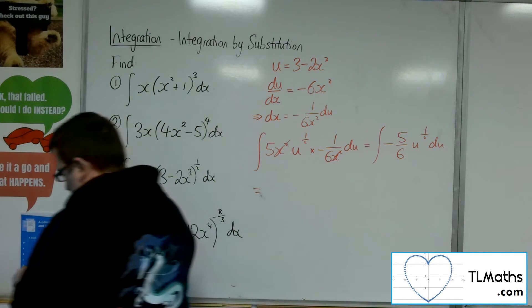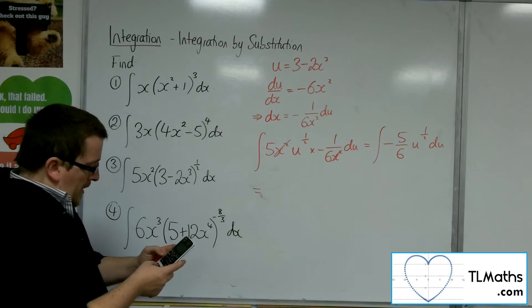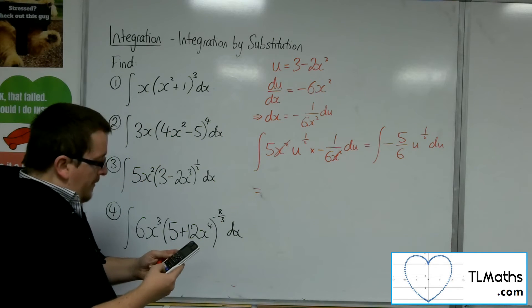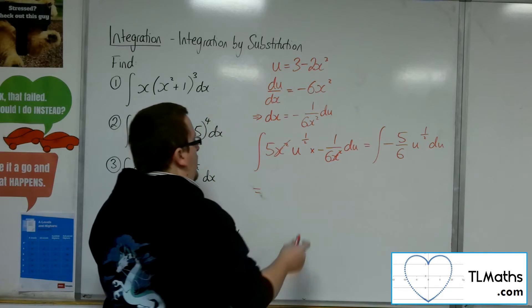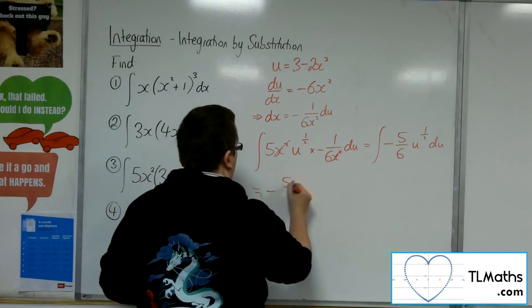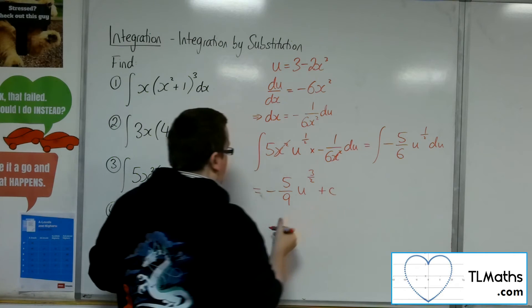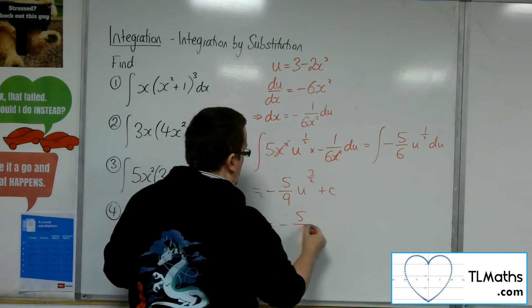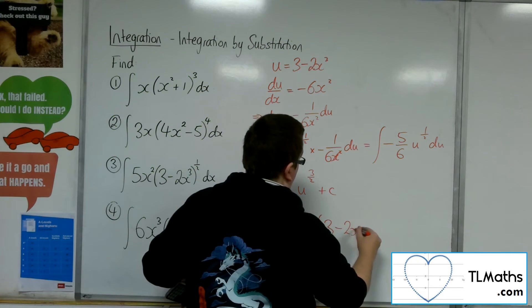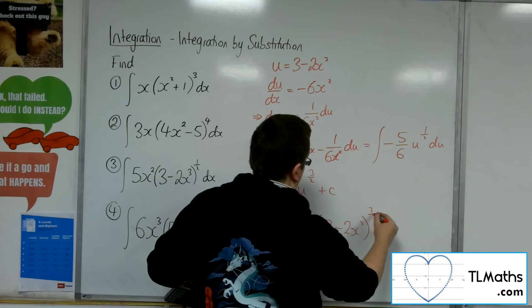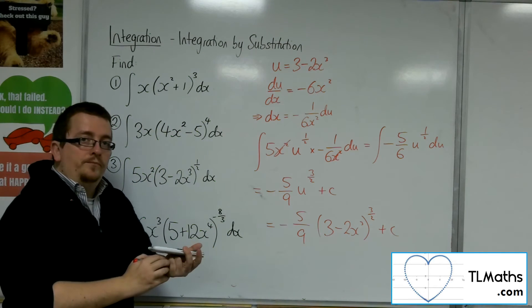I now need to add 1 to the power divided by the new power. So minus 5 over 6 divided by the new power, 3 halves. So minus 5 ninths u to the 3 halves plus a constant c. And the u is 3 minus 2x cubed. There is my answer for number 3.